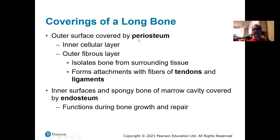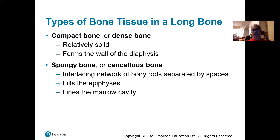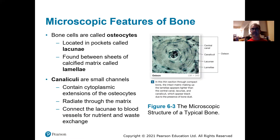The outer surface is the periosteum. The inner surface lining the marrow cavity is called the endosteum — 'endo' meaning inner. In a long bone you have compact bone, which is dense and what we think of as bone, and spongy bone underneath it.